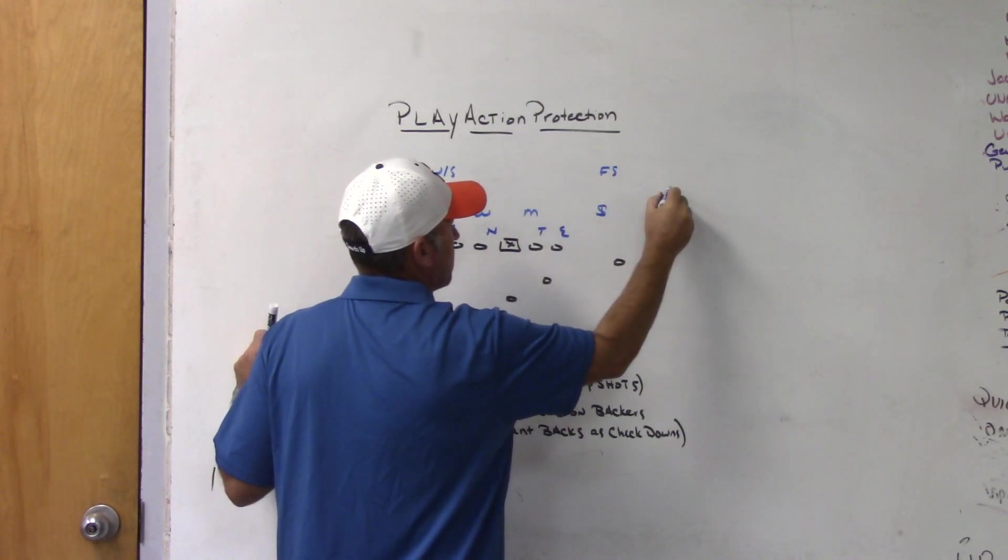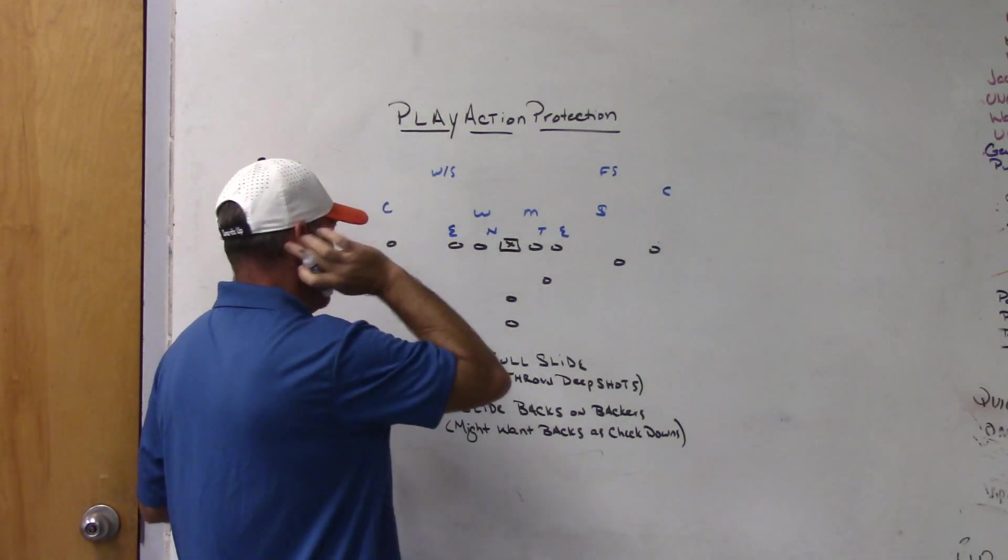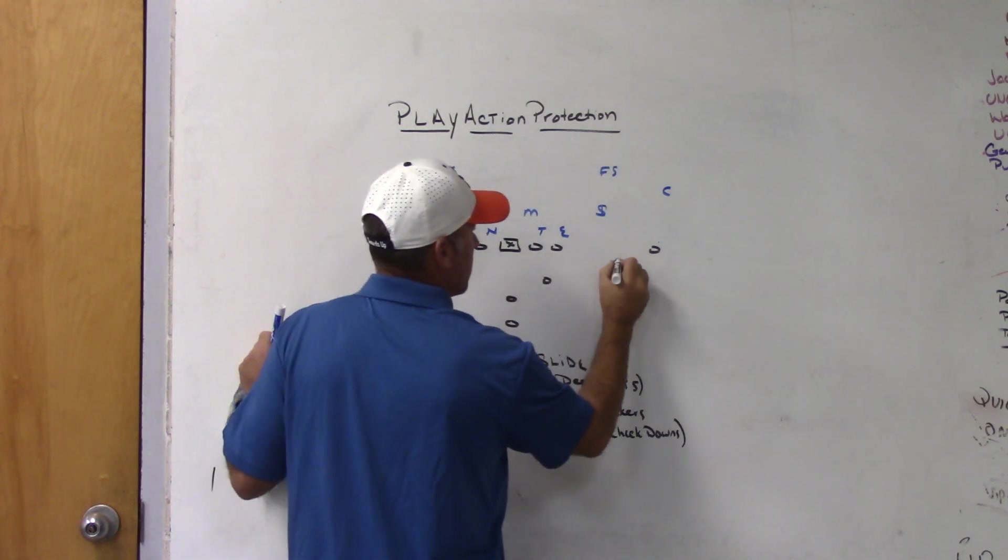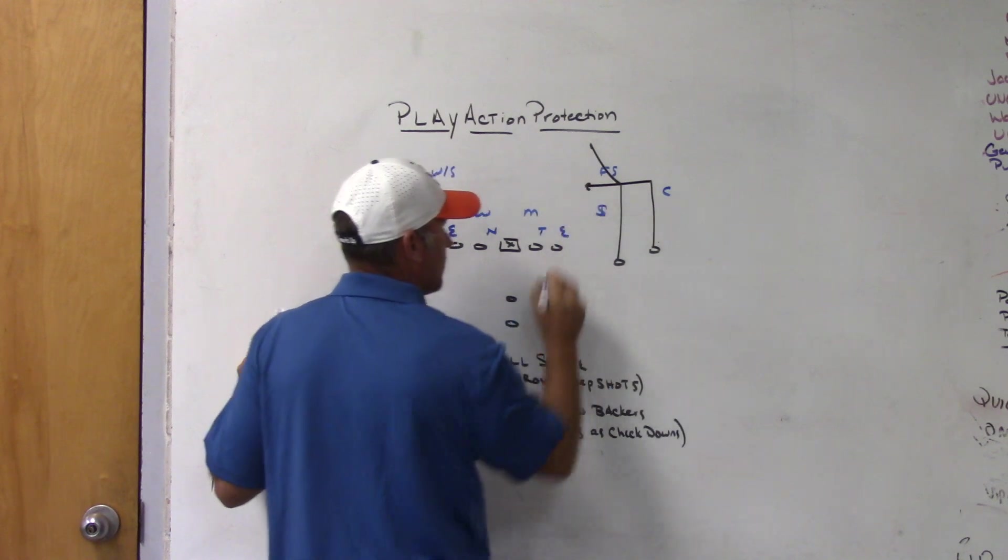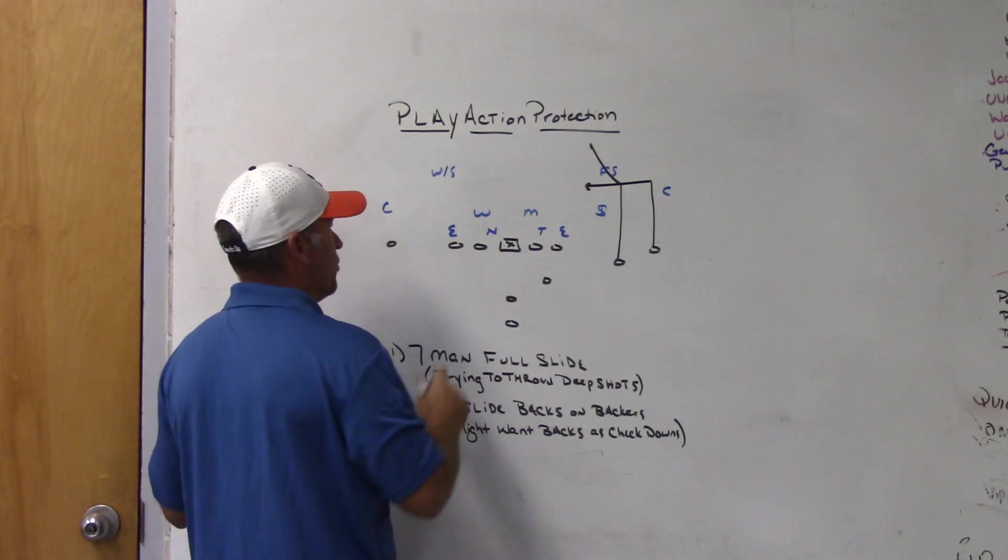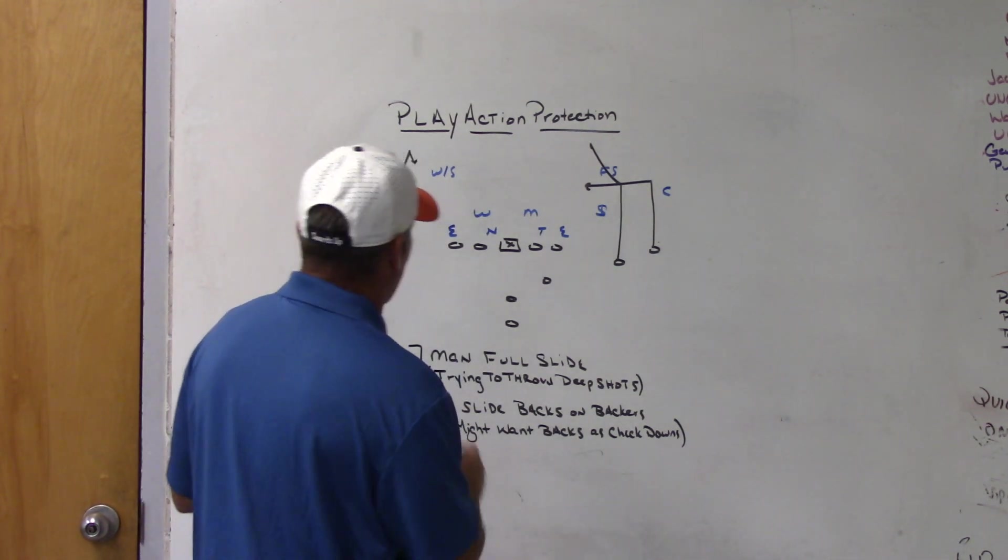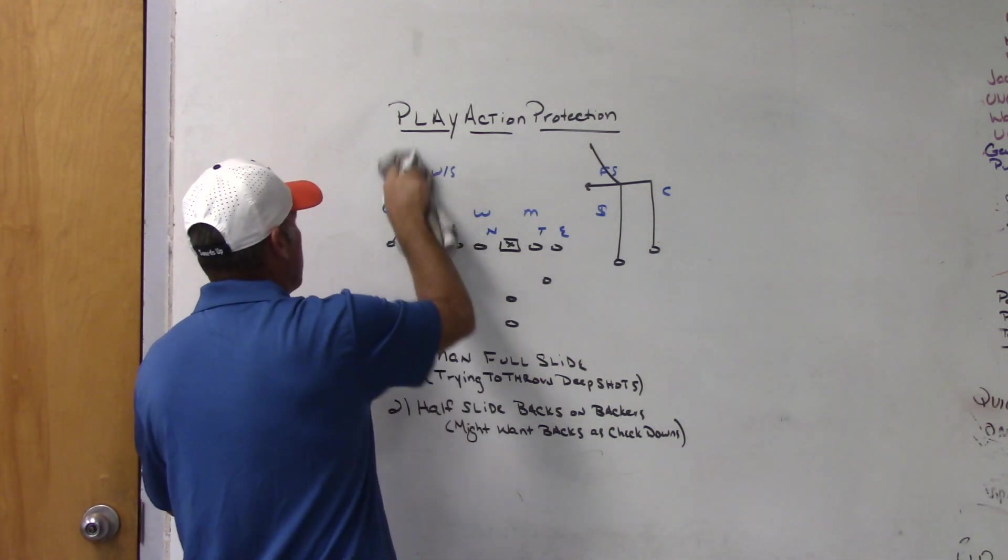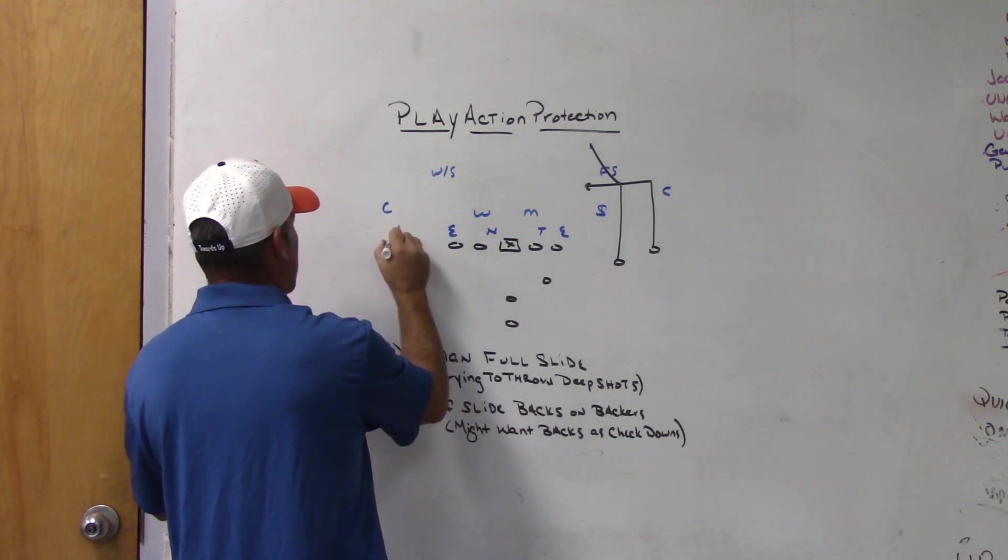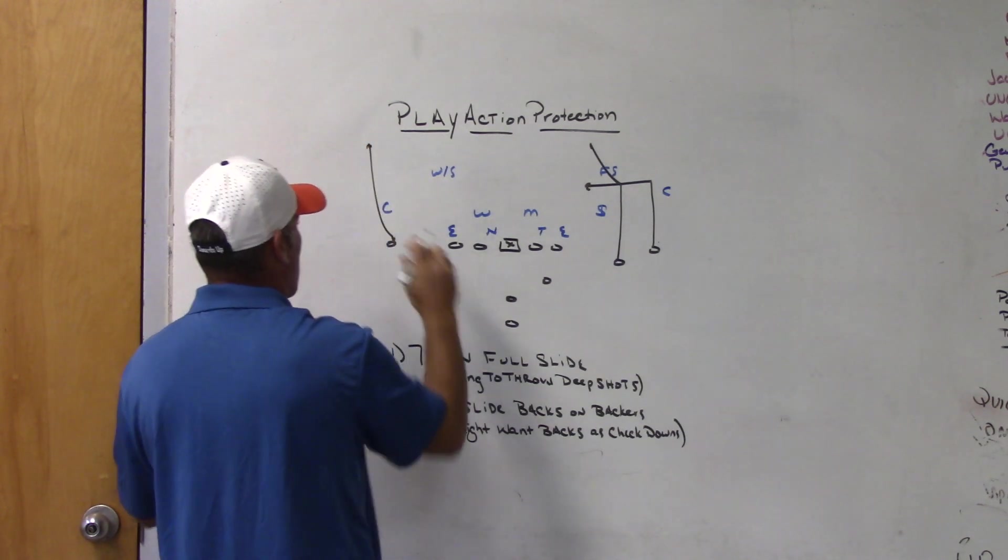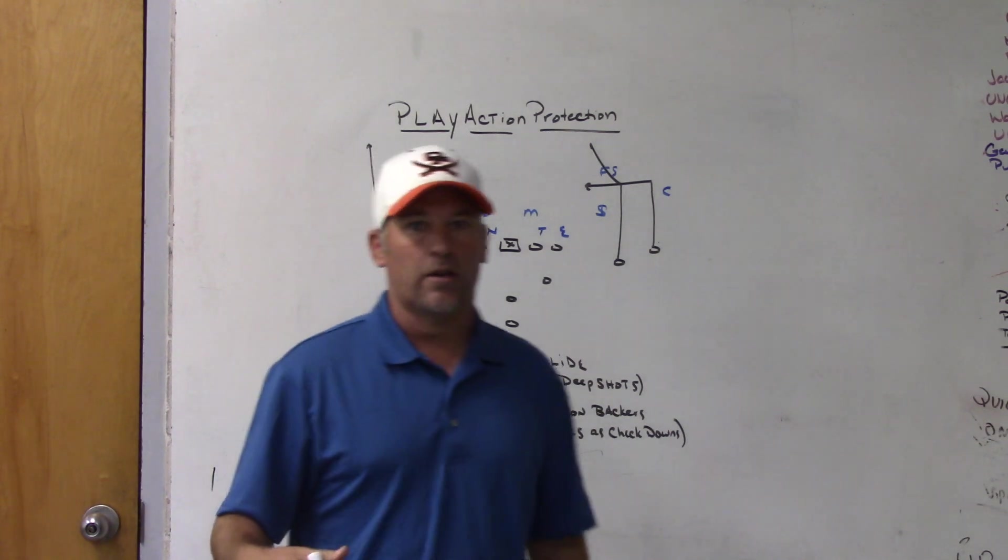So we usually block a gap scheme or some type of half slide, and now we will replace backers with running backs. So let's say we wanted to maybe clear out the middle with a deep post there, run the dig. So we got the post by two, the dig by one. Maybe on the back side we'll build in some type of check down or some type of half field concept. It can even be something on the back side that the quarterback can get right away. We can even build in some type of vertical or go-versus-press. But what we're talking about right now is we're looking more at the pass protection, not the route concept scheme.